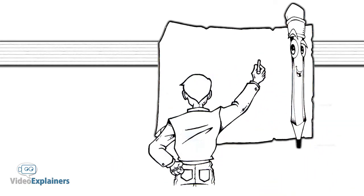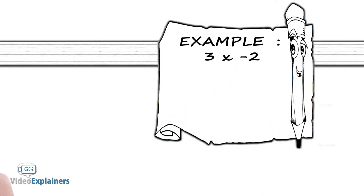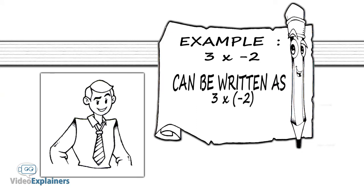Example: three times negative two can be written as three times negative two with the negative two in parentheses.